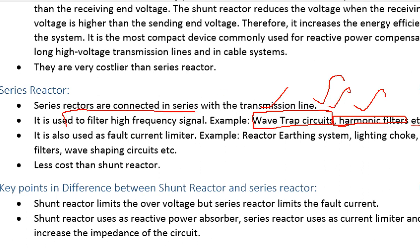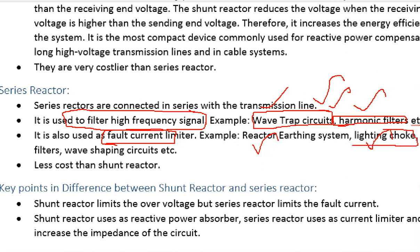It is used to block high frequency signals. If you want to limit the local usage, limit the fault current. The inductor will not allow a sudden change of current. If there is a series reactor, there is fault current reduction, light current limiting, and it is also used as a choke. We will limit the current.